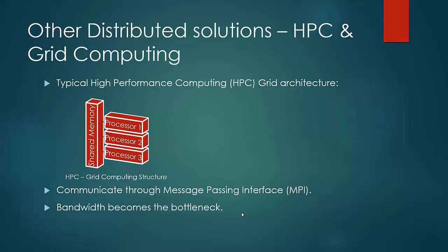One of the distributed solutions which has served us well till now is the high performance computing and grid architecture. In a typical high performance grid architecture there are a number of processors communicating through message passing interface (MPI) and shared memory. This serves well in compute intensive jobs where large amounts of data, say hundreds of GB, is not needed. As the data size increases, the network traffic increases and hence bandwidth becomes a bottleneck.